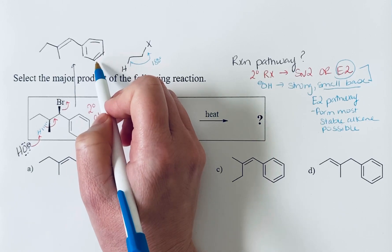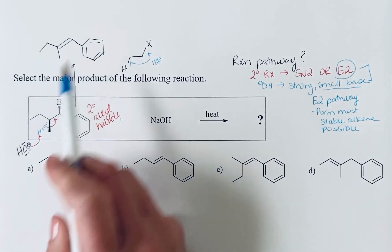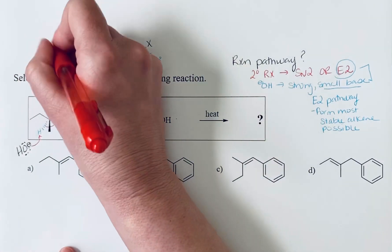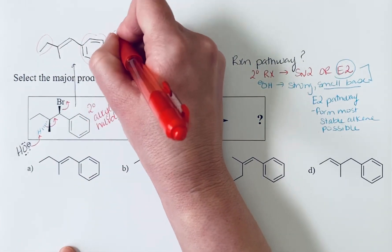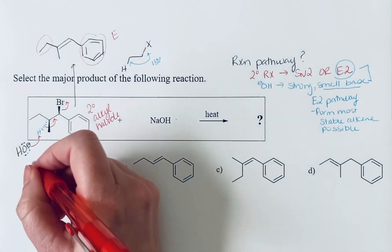And specifically we want to make sure that we select this isomer. So this is the E isomer - we can see the higher priority group here and here. So that's the E isomer and that is option A.